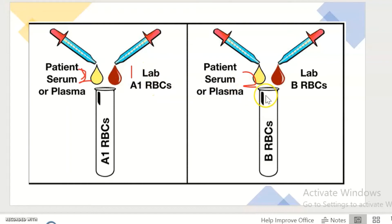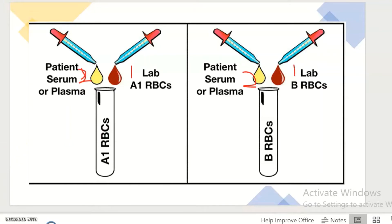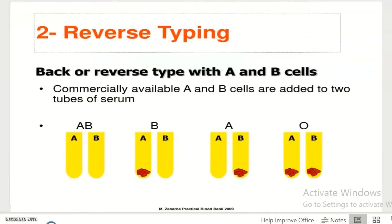And add one drop of B reagent RBCs to the tube labeled B. Mix the tubes gently and centrifuge for 15 to 30 seconds at 1500 RPM. And examine the tube for agglutination.